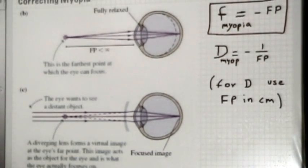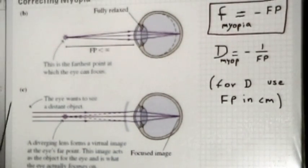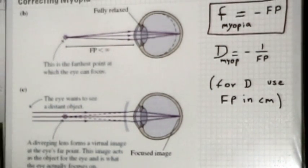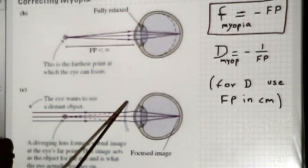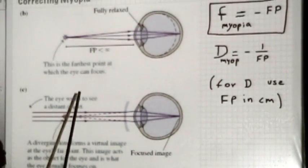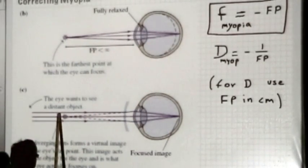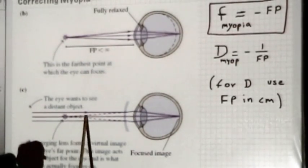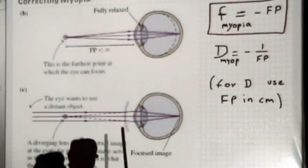So how do you correct for myopia? The real problem is that you cannot see objects further away than the far point, and that far point is not infinity. So if you place an object at infinity, the eye by itself cannot focus those light rays. What you want to do is place a lens here so that those light rays seem to be coming from your far point. Light rays diverging in that specific way can then get focused on the retina. So if you make the parallel light rays coming in look like they're coming from the far point, they will be focused by the eye — no problem.